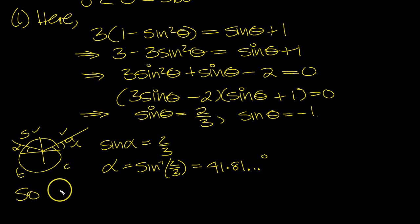So theta then, the first solution is around here: 41.81. And the next solution for theta would be around here, 180 minus 41.81, which is 138.19 degrees. And that's both to two decimal places.